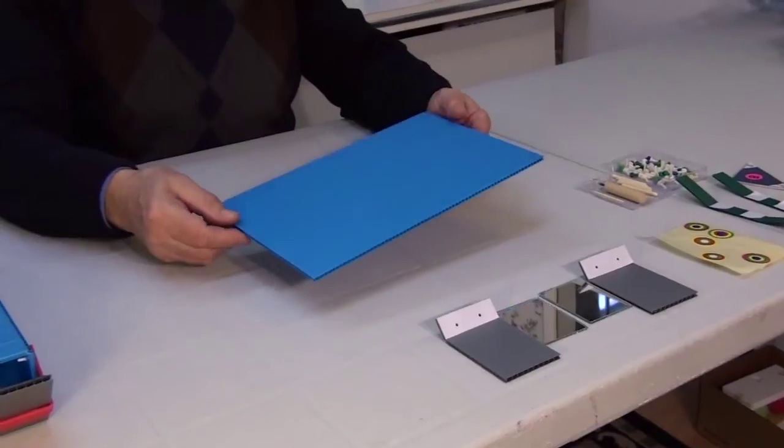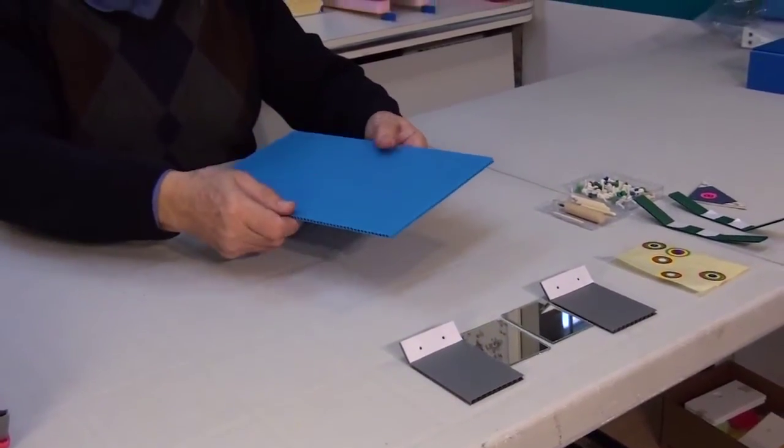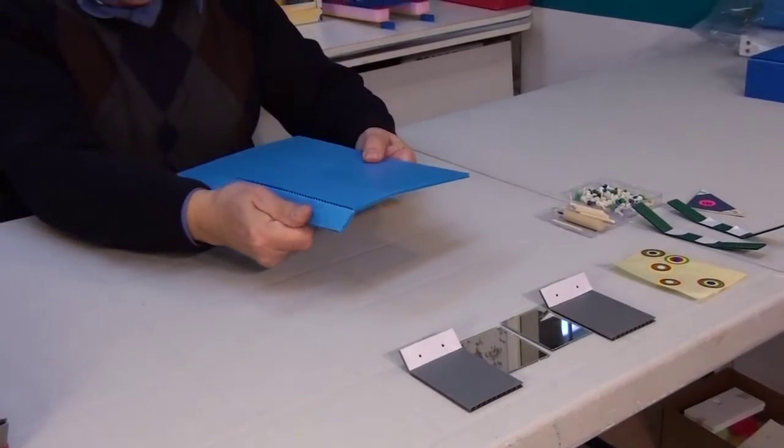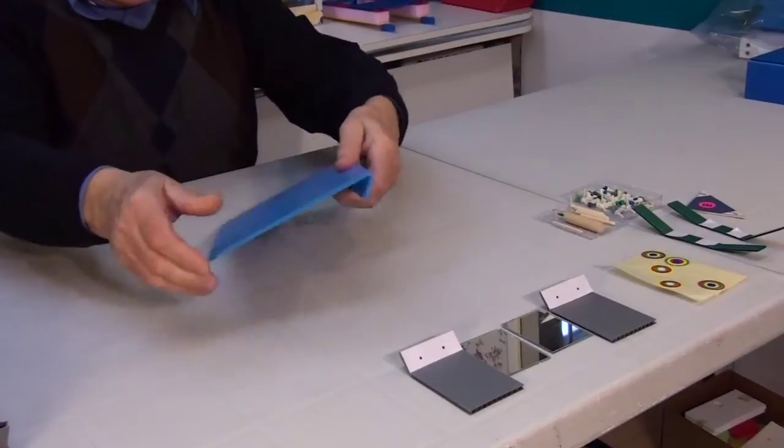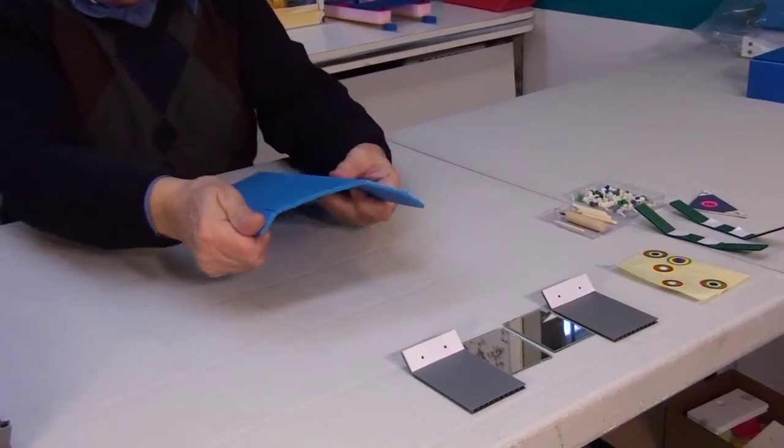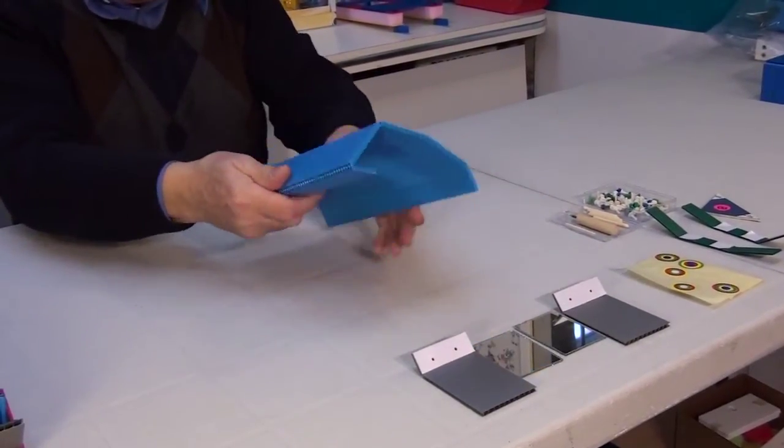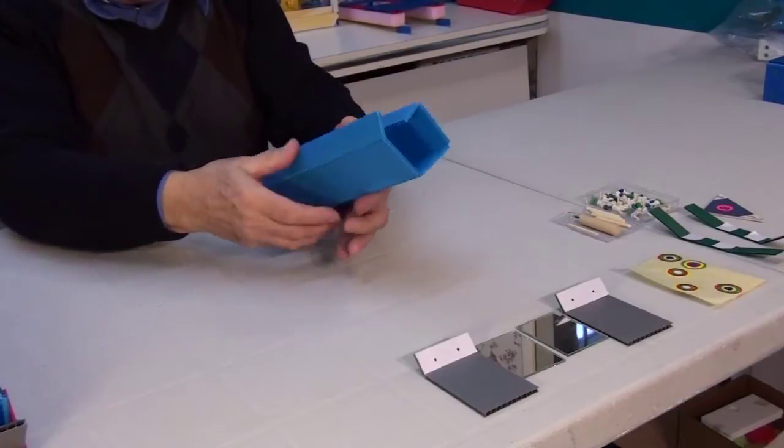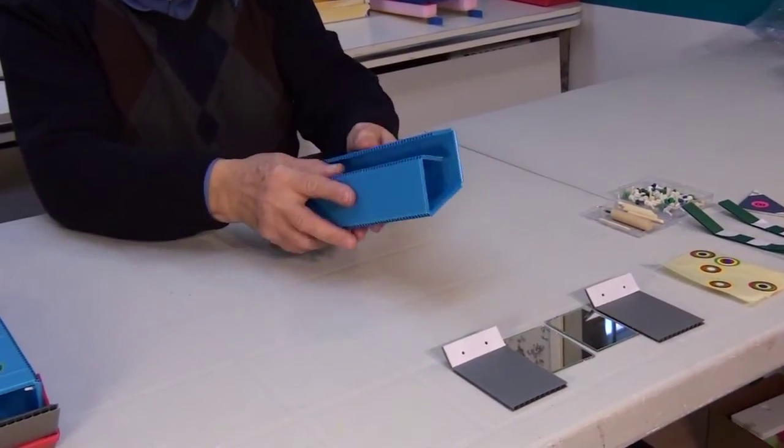We will begin assembling the periscope. Take the scored part, fold the plastic along each scored line, just like so, all four. Now you can see that we made a sort of a square tube.